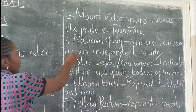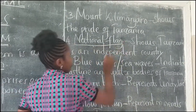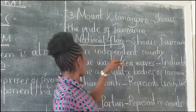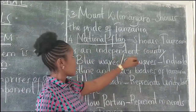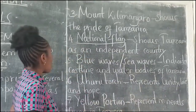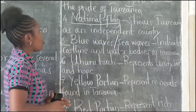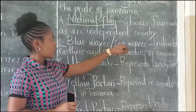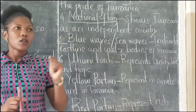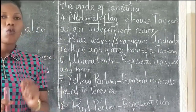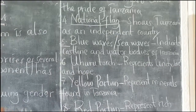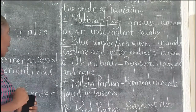Component number four is the national flag, which shows Tanzania as an independent country. Component number five is blue waves, or sea waves. Blue waves indicate the coastline or water body resources like lakes, oceans, rivers, and so forth.